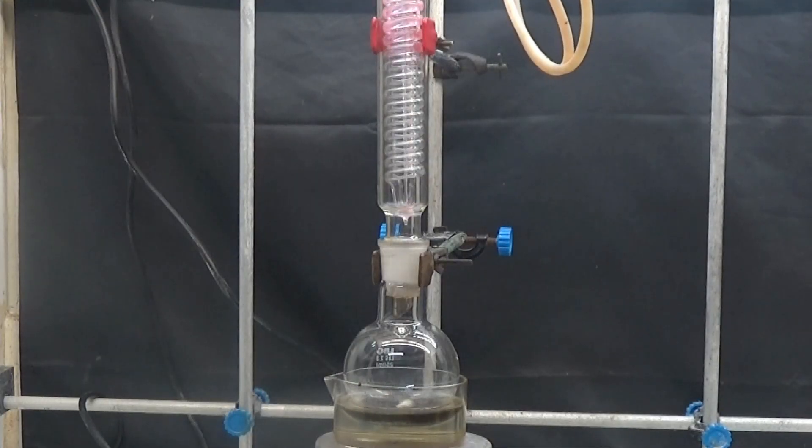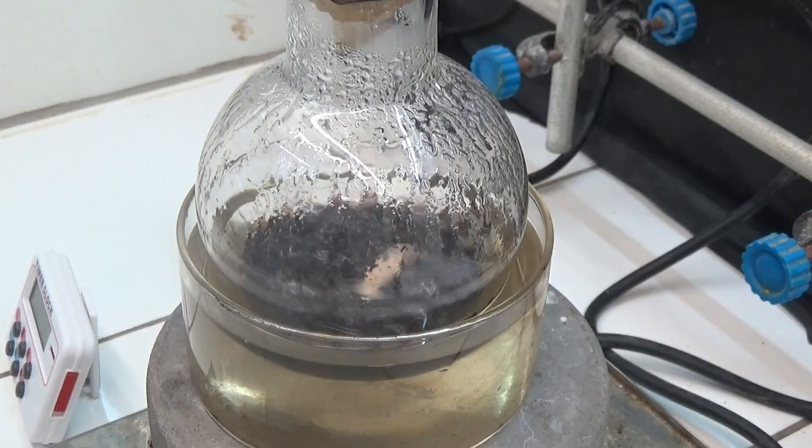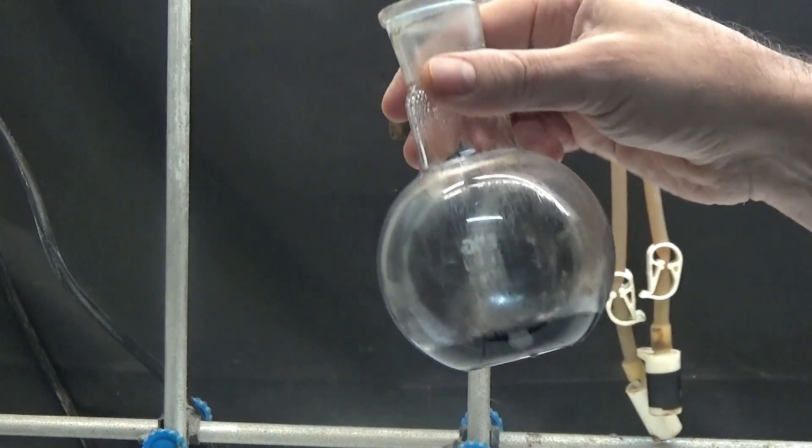Stir to homogenize the mixture and heat the flask with an oil bath and a condenser. Heat the mixture for 2 hours at reflux. The reaction product is a black solid.